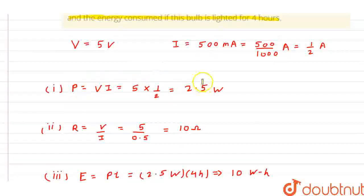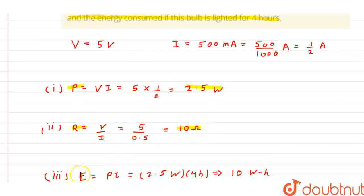So, first case answer, power is equal to 2.5 watts. Resistance is equal to 10 ohm. And energy is equal to 10 watt hours.